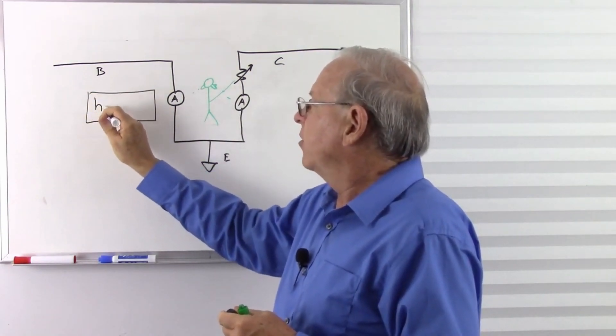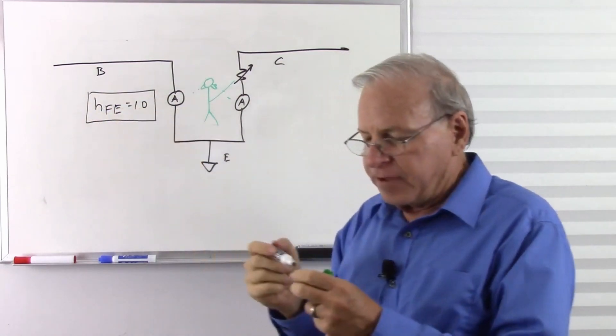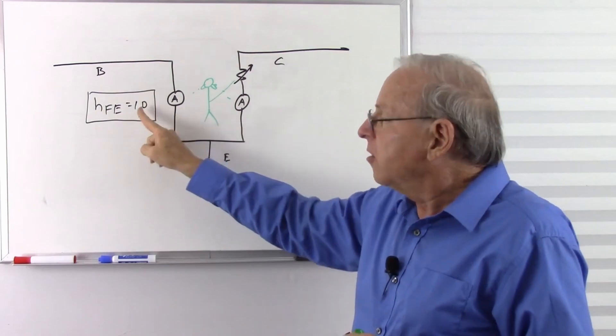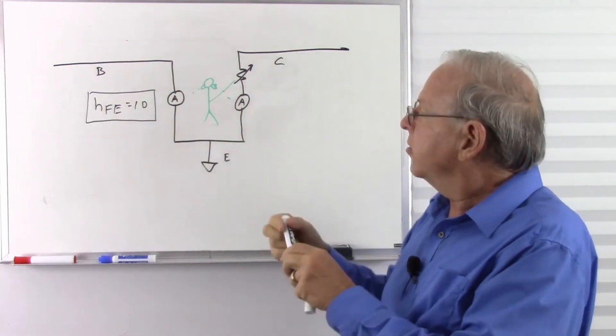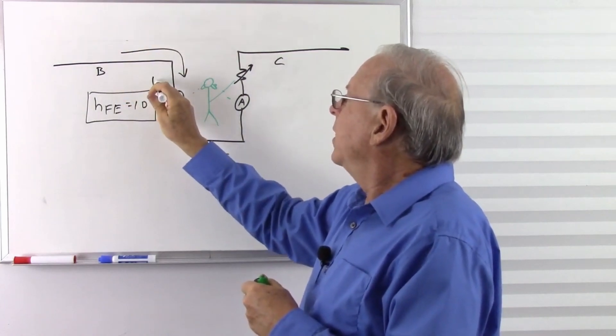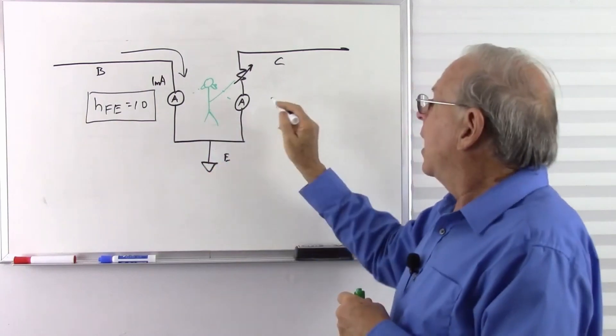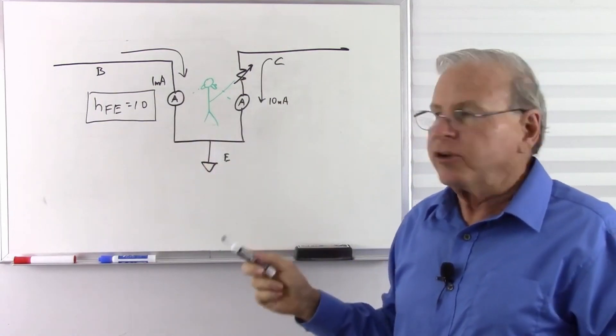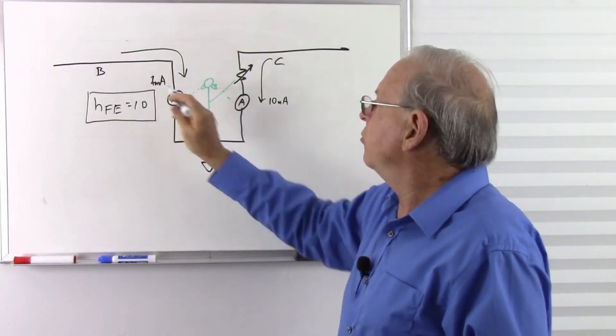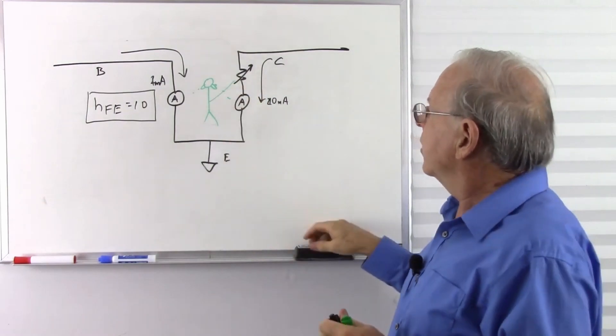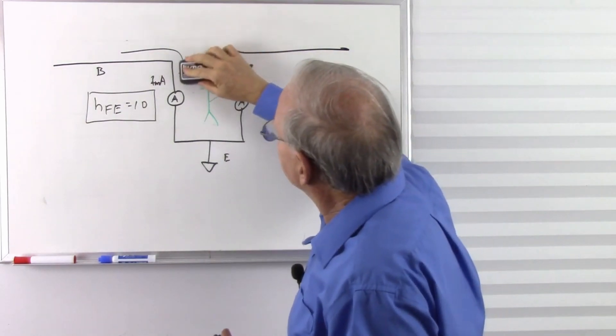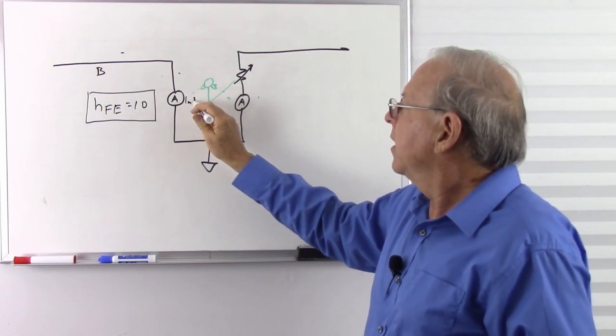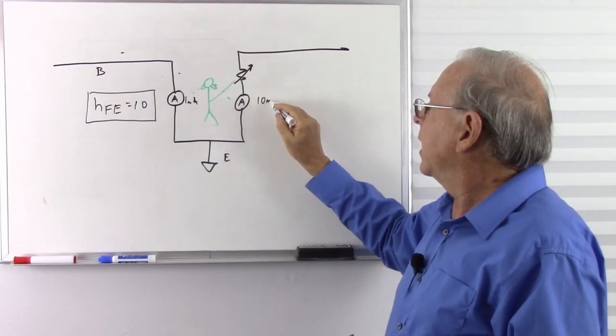That plaque says HFE equals 10. HFE is the hybrid parameter, forward biased, common emitter circuit. The HFE tells us the ratio of base current to collector current. So what this says is if I put in 1 milliamp on the base, I'm going to get 10 milliamps on the collector. That means I have a base to collector current ratio of 10. And if I double this to 2 milliamps, this is going to double to 20 milliamps. So that's what the circuit does.